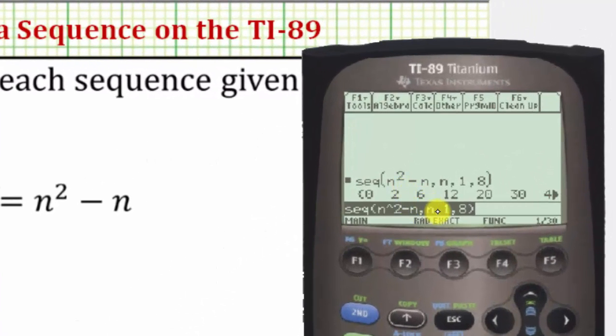And now we have the first eight terms of the sequence given by a sub n. Notice how there's an arrow on the right which means the terms continue to the right. So let's press the up arrow.